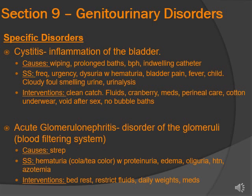Acute glomerulonephritis is a disorder of the glomeruli — think of the blood filtering system. Causes include strep. Signs and symptoms are hematuria, cola- or tea-colored urine, protein in the urine, edema, oliguria, hypertension, and azotemia — which is a high level of nitrogen-containing compounds like urea and creatinine. Interventions: bed rest, restrict fluids because of edema, monitor daily weights, and give medications like antihypertensives, corticosteroids for inflammation, or penicillin for strep.